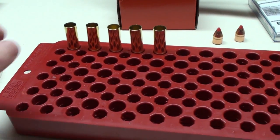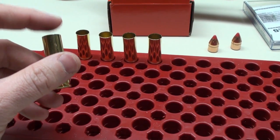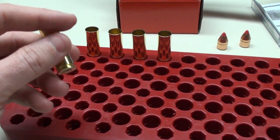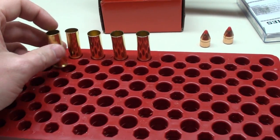Once you have your cases expanded at the top where you can seat the bullet (I'll show you how to do that later), and you have your primer in place, the next step is to add powder.